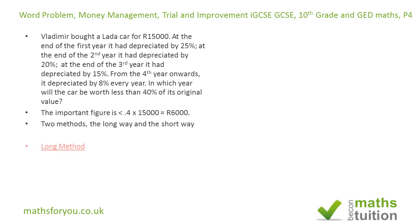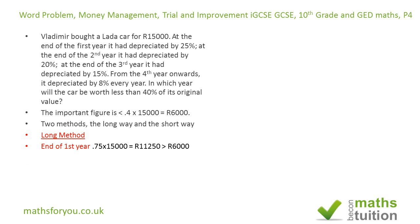For the long method: at the end of the first year, the car will be worth 0.75 of 15,000 rubles, which is 11,250 rubles, because it's gone down by 25%.